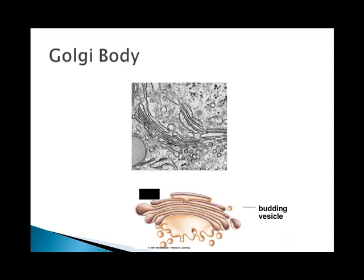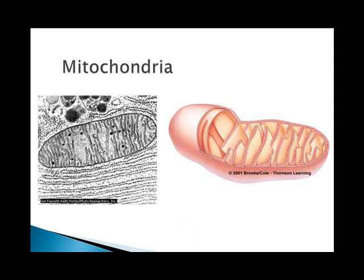The Golgi bodies look like flattened stacks of pancakes. They store, sort, and ship materials in vesicles — so they're kind of like the UPS of the cell. The mitochondria convert food molecules into ATP for cell use. The outer membrane is smooth and the inner membrane is folded; those folds are called cristae, to allow for more ATP production. The inner portion is called the matrix. The mitochondria are equivalent to the power plant of the cell.